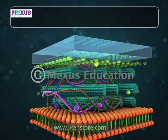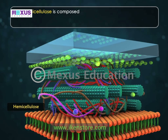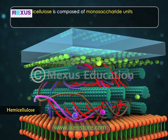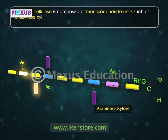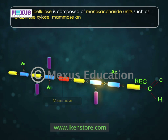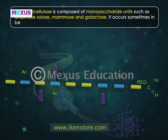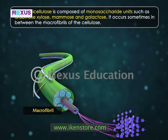The hemicellulose is composed of monosaccharide units such as arabinose, mannose, and galactose. It occurs sometimes in between the macrofibrils of the cellulose.